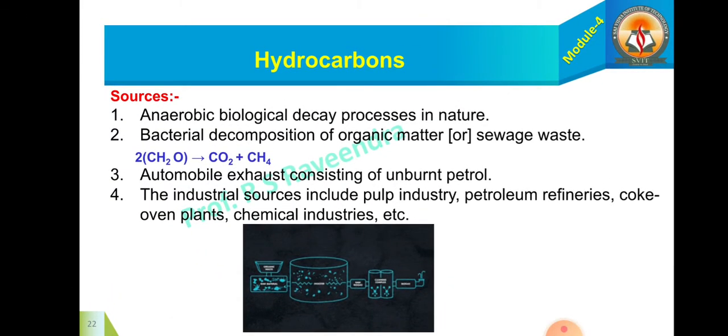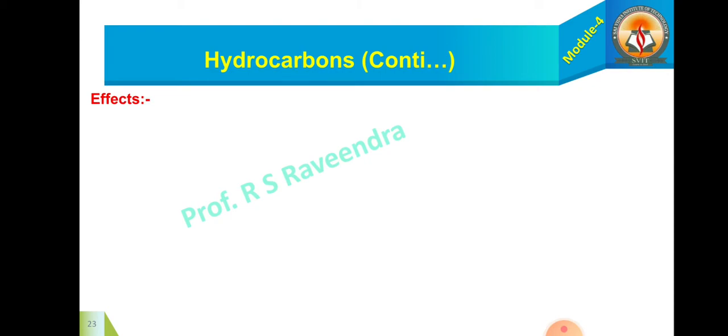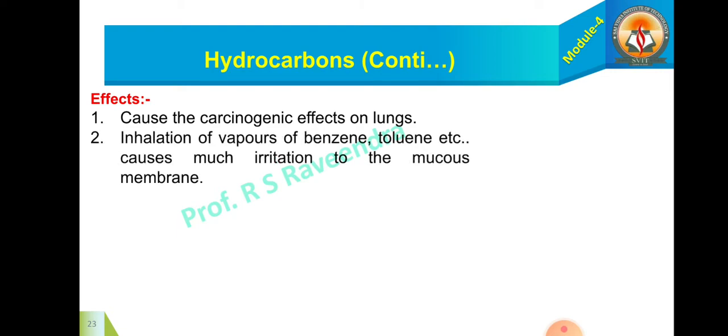Now next is effects of the hydrocarbon. It mainly causes carcinogenic effect on the lungs, lung cancer may be the result of hydrocarbon inhalation. Secondly, inhalation of vapors of benzene which is a hydrocarbon aromatic hydrocarbon, toluene again aromatic hydrocarbon causes much irritation to the mucus membrane. Thirdly, cyclic hydrocarbon such as cyclobutane, cyclopropane, cyclohexane etc. affects nervous system.